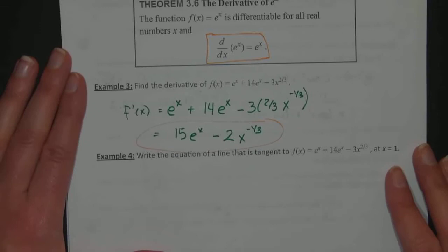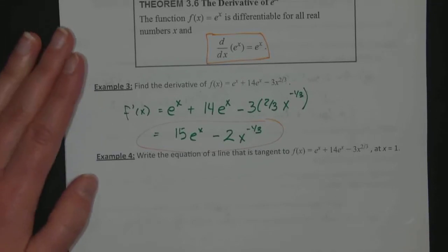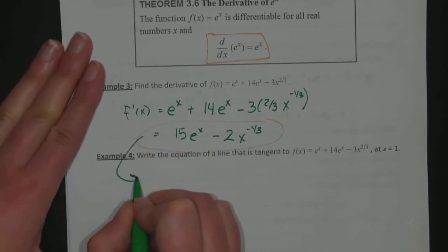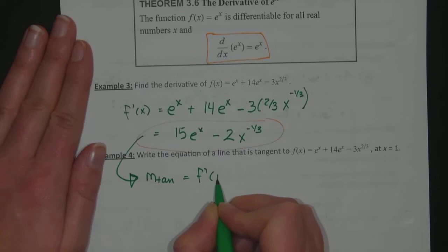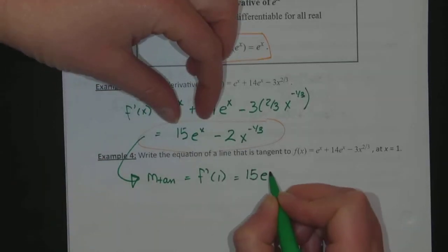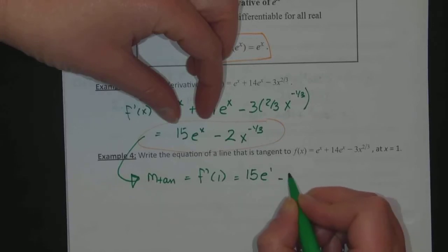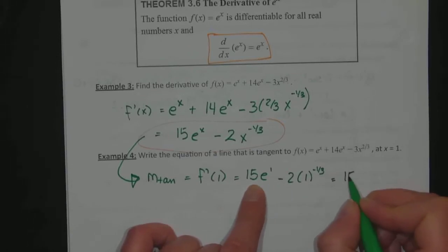In example 4, we want to write the equation of a line that is tangent to this line at x equals 1. Well, I've already found the derivative. If I want the equation of a tangent line, I know that its slope, the tangent slope, is f prime of 1. So that's 15e to the 1 minus 2 times 1 to the negative 1 third. 1 to any power stays 1, except for 0 power. So that's going to be 1. And so I have 15e minus 2 for my slope.